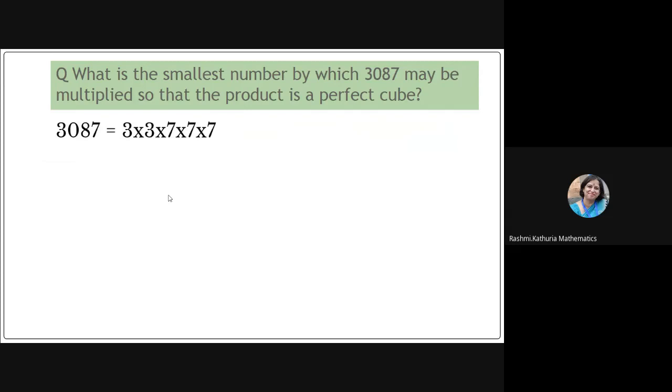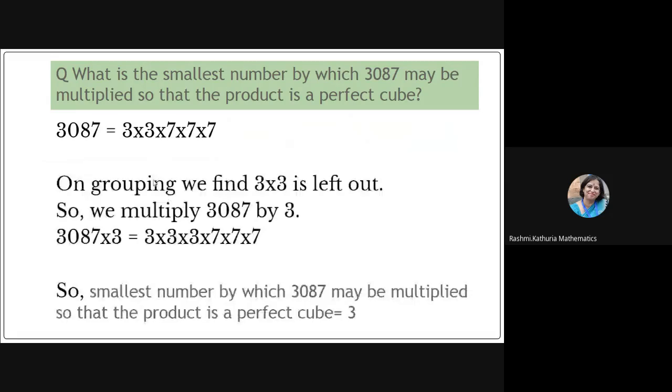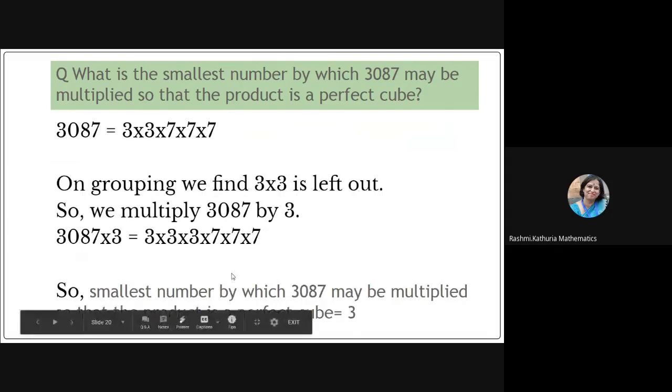So on grouping, we find 3 × 3 is left out. So we multiply 3087 by 3. So observe the product will be like this. So the smallest number by which 3087 may be multiplied so that the product is a perfect cube is equal to 3. I hope the question is clear to you.